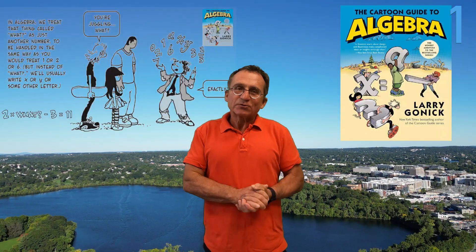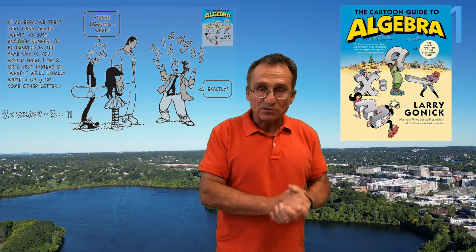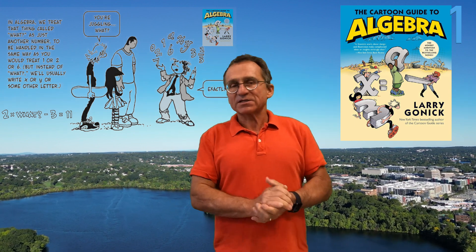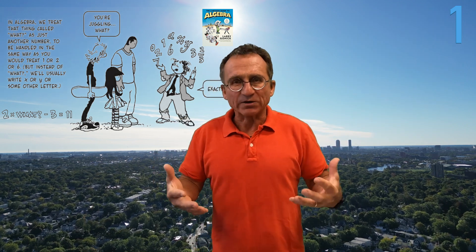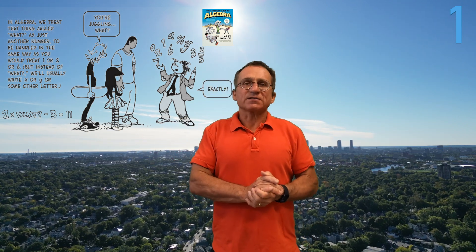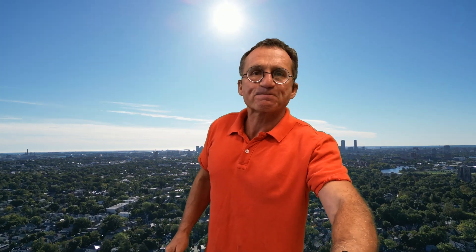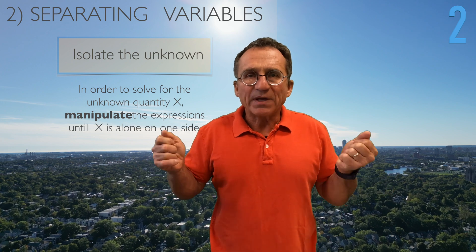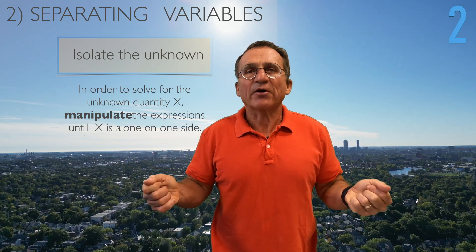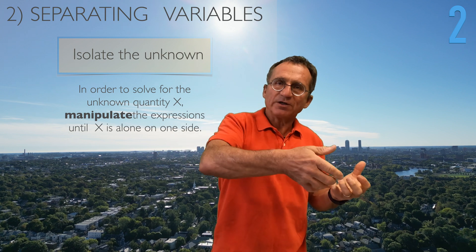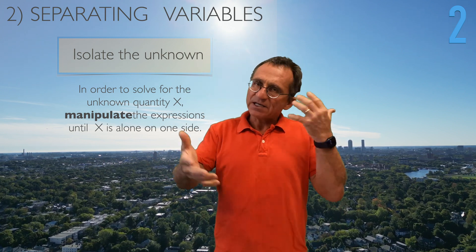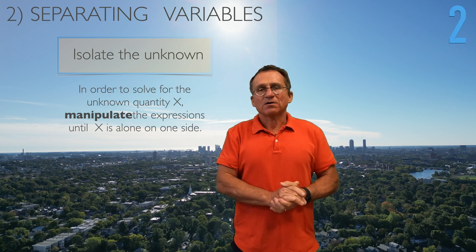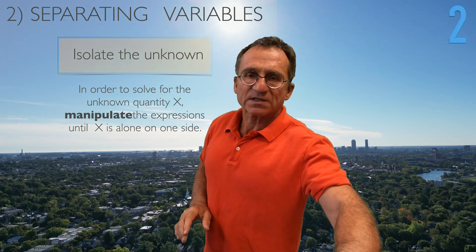Here is a nice cartoon by Larry Gonick which explains that this unknown quantity is denoted by a letter like x or y. As we have seen, it's important to be able to separate a variable — we isolate the unknown quantity and put it on one side, and everything else on the other side. That needs some manipulation skills until x is on one side.